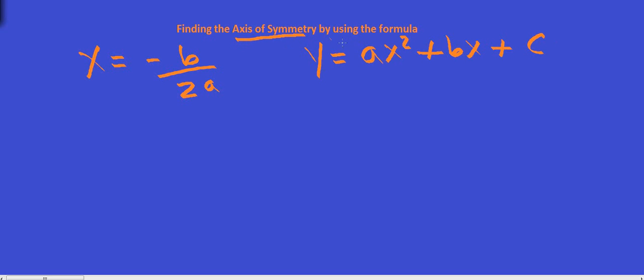If you don't remember what the axis of symmetry is, we've got a parabola, right? Well, that's not a good picture at all. We've got a parabola. The axis of symmetry is the line that goes through the vertex. That's your axis of symmetry, and that's the parabola.